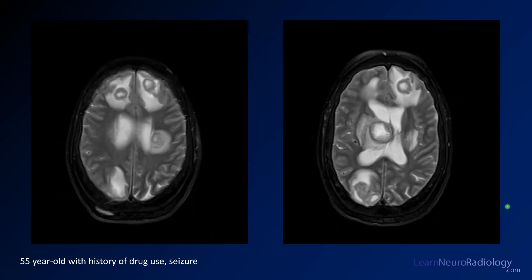On T2 images you can see a T2 dark rim around these abscesses, which is a characteristic finding. A few entities are noted to have T2 dark rims: abscess and tuberculomas or tuberculosis in the brain. All of these fluid collections have very T2-dark rims. If you see that finding, keep abscess in mind as a key consideration.